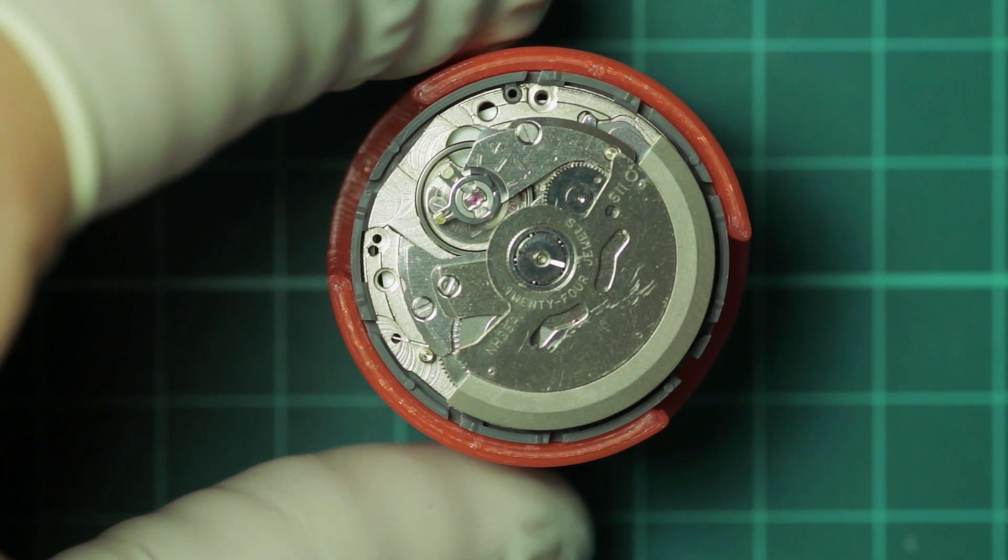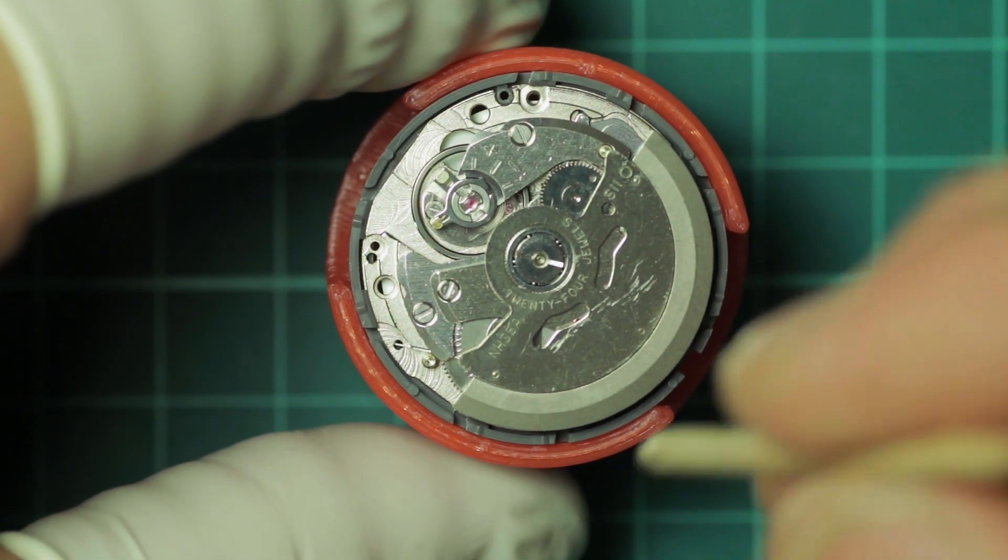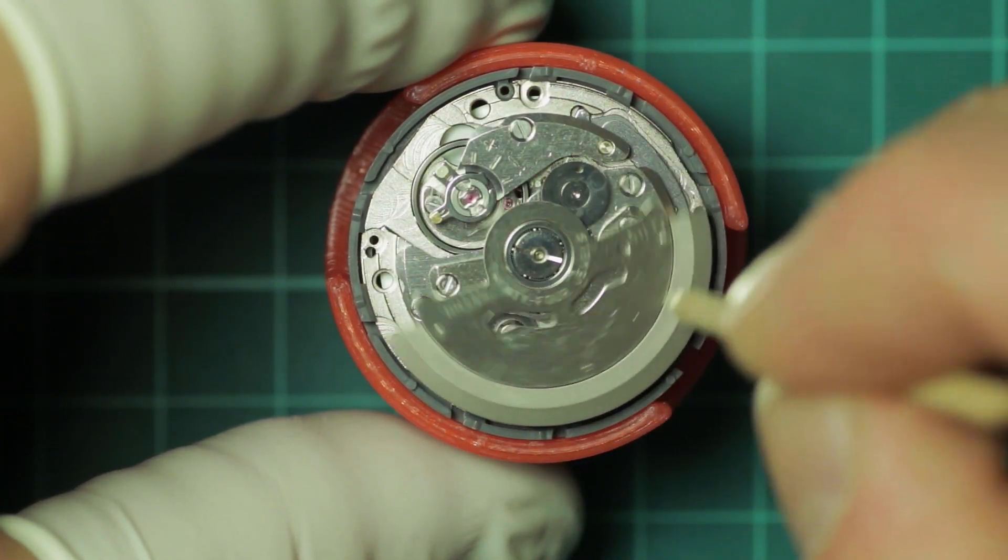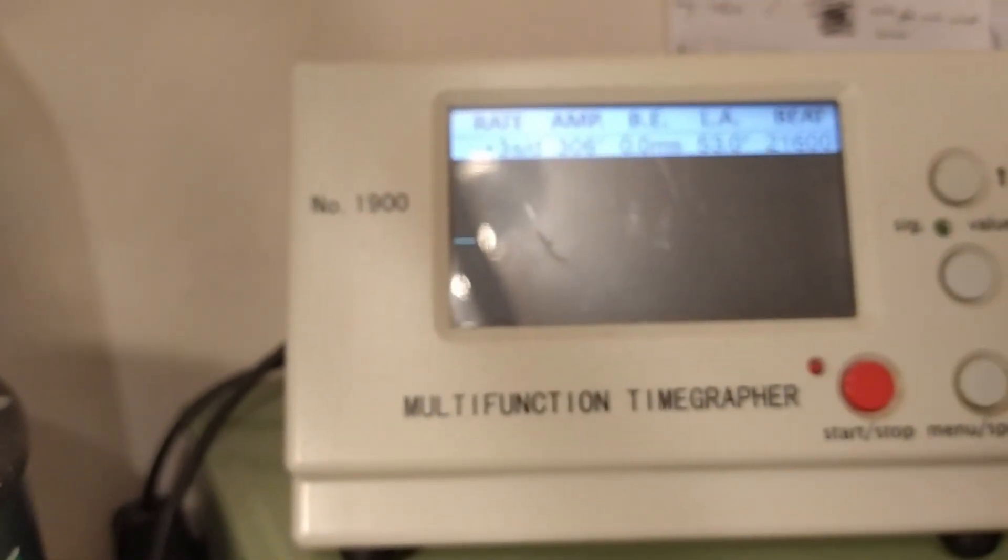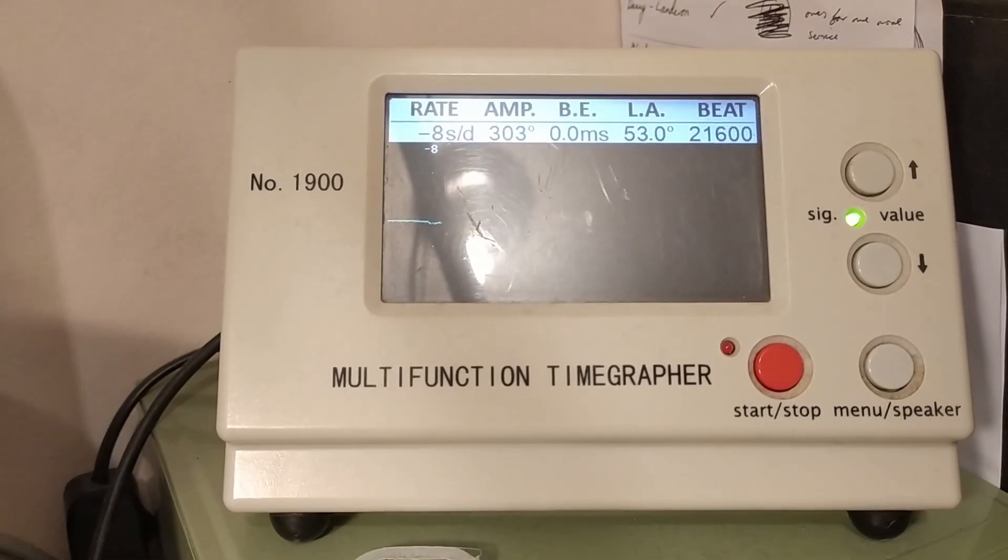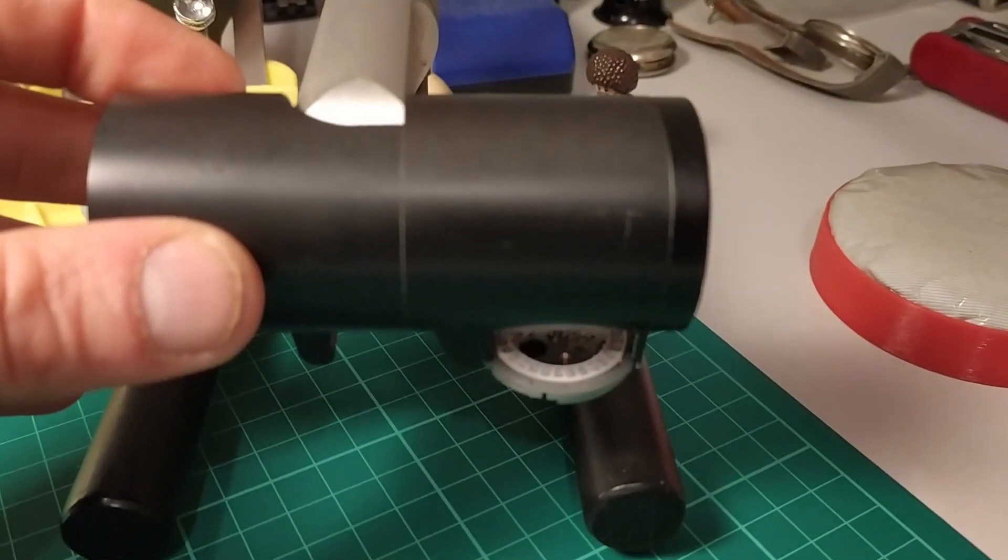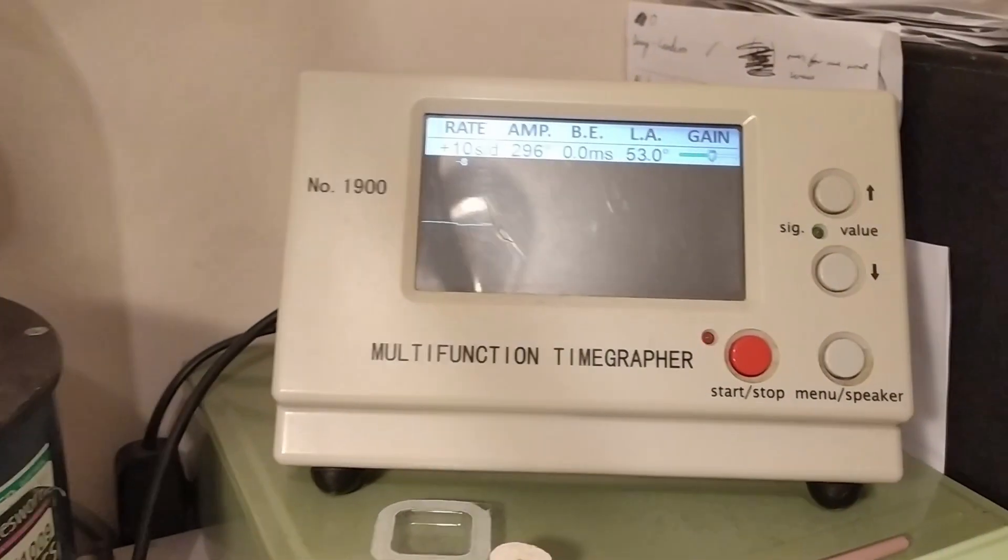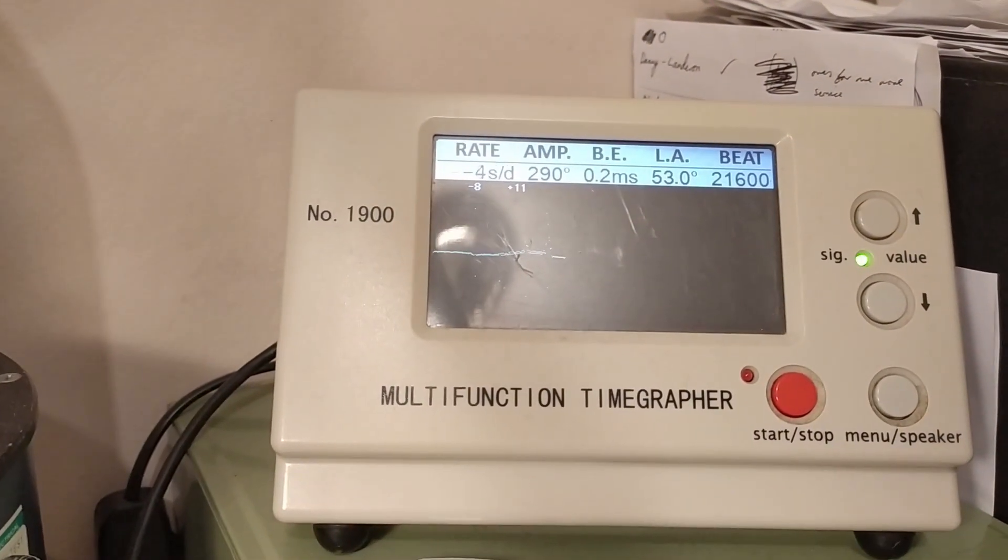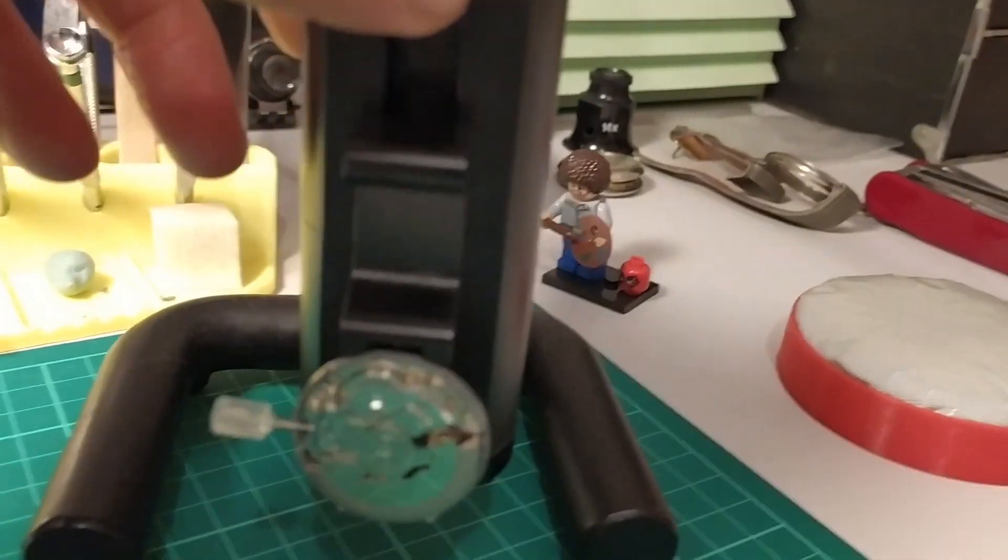And as final part, here's a short clip of the watch on the timegrapher. And once that focuses, you can see here it's running dial up, and the little hiccup there is when I turned it to dial down, which you can see there. And then look, pendant down, pendant right as it would be on your wrist, pendant up, and finally pendant left. And you can see it's giving very, very good performance.